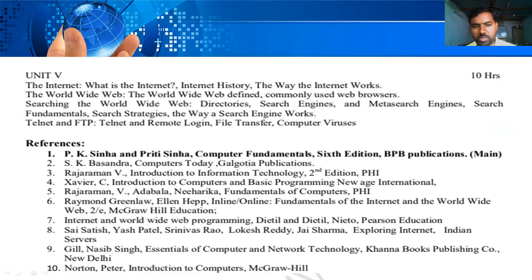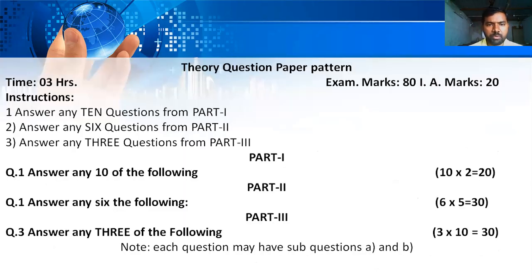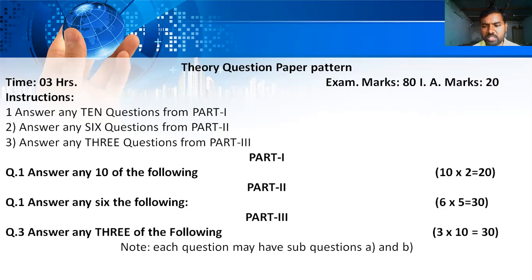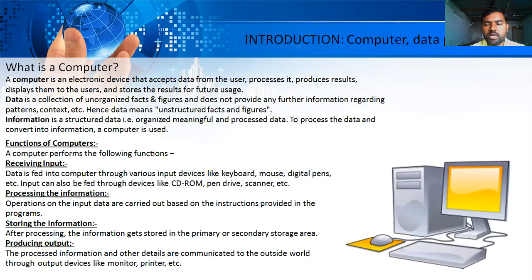The question paper pattern has a total of 80 marks, with 20 marks for internal assessment. Part one has 10 questions worth 2 marks each (total 20 marks). Part two has 6 questions worth 5 marks each (total 30 marks). Part three has 3 questions worth 10 marks each (total 30 marks). This is the pattern to prepare for main examinations.